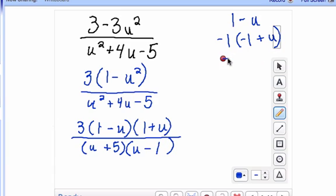And so what I get is a negative 1 times, and I'm going to rewrite these so I have the positive u first and plus a negative 1. Well, that's just the same thing as minus 1.